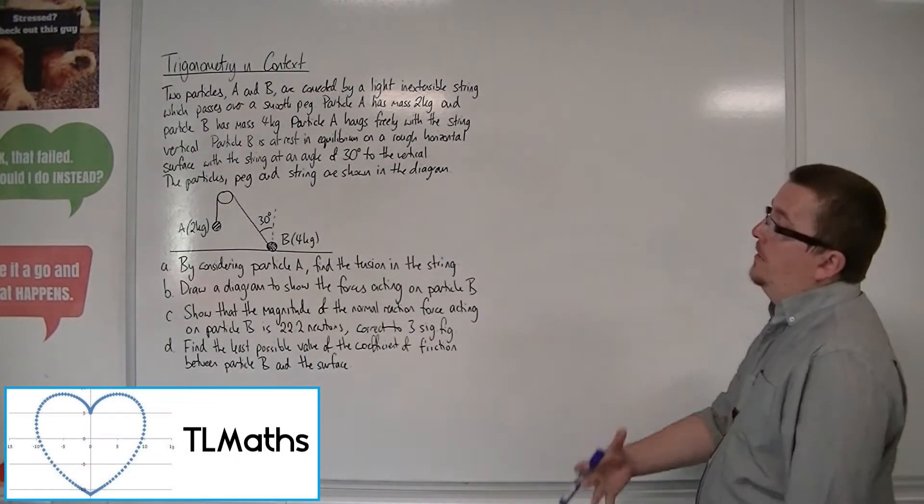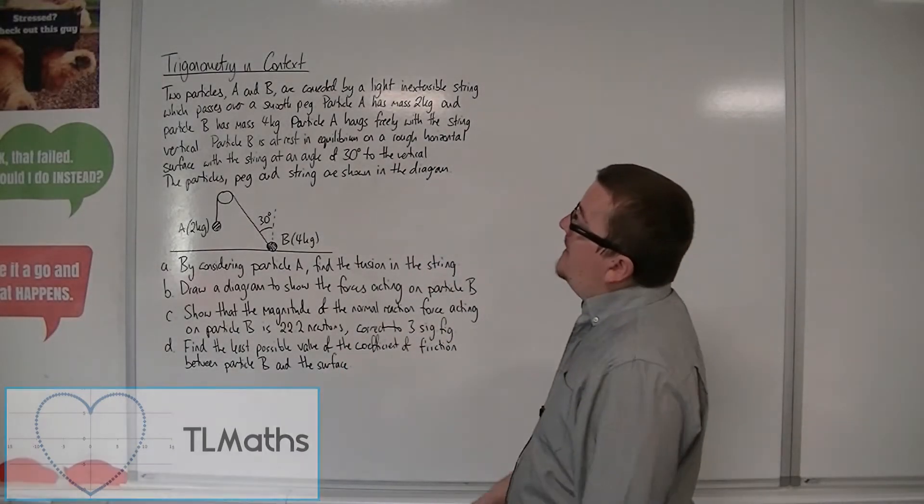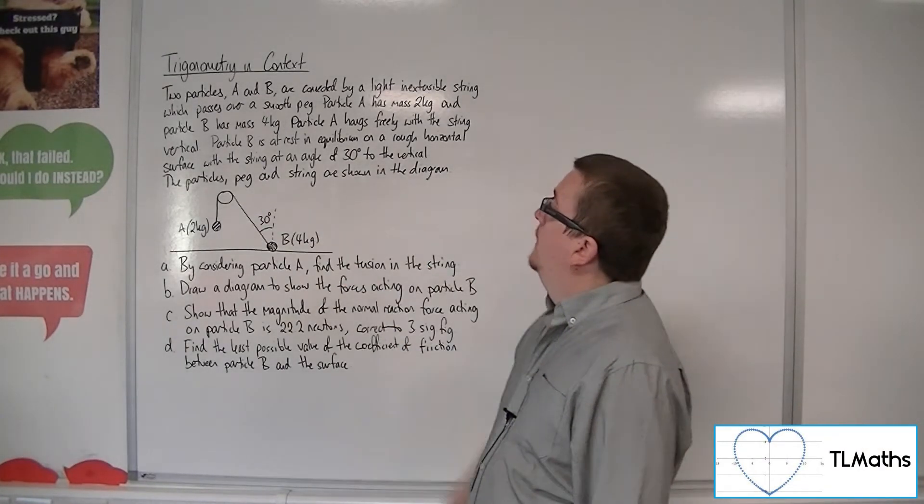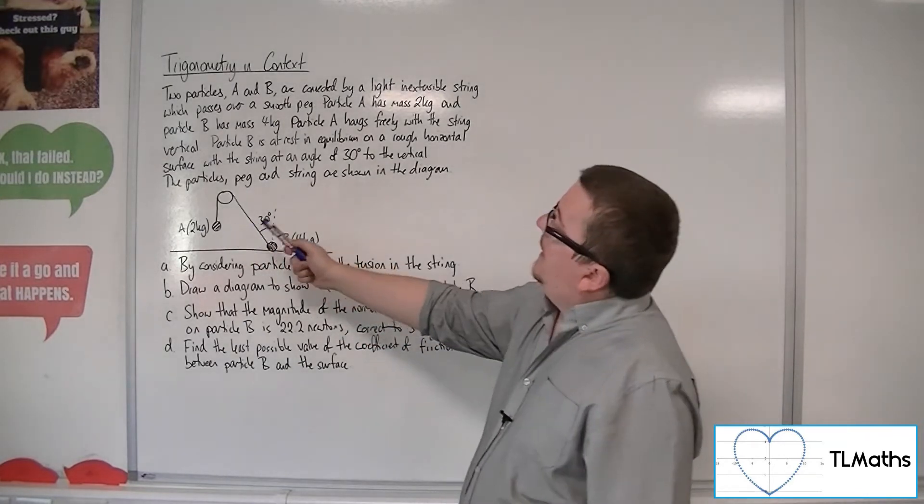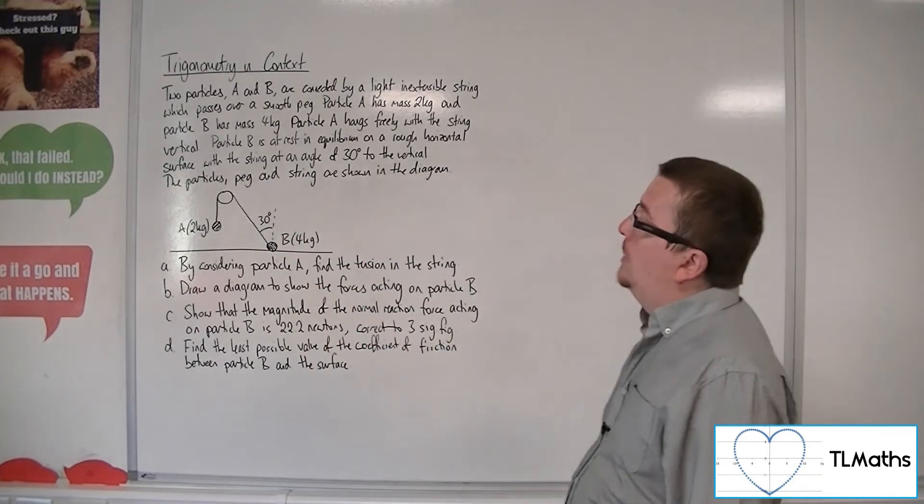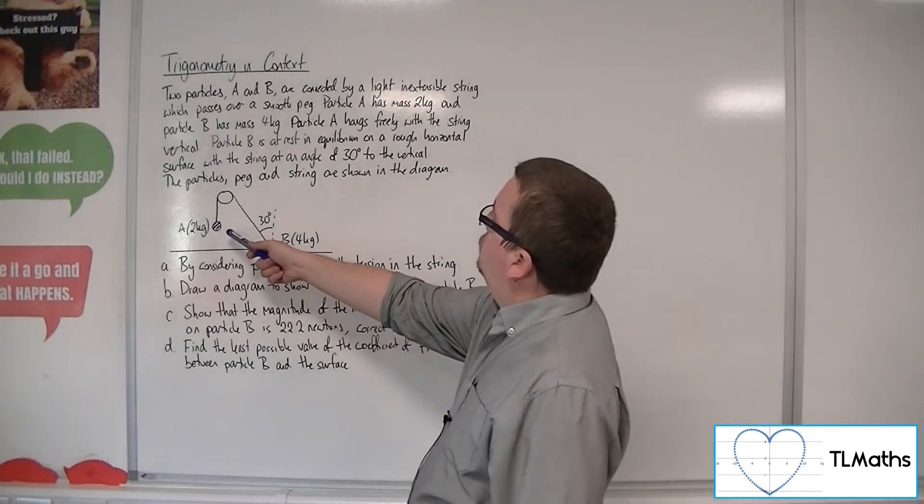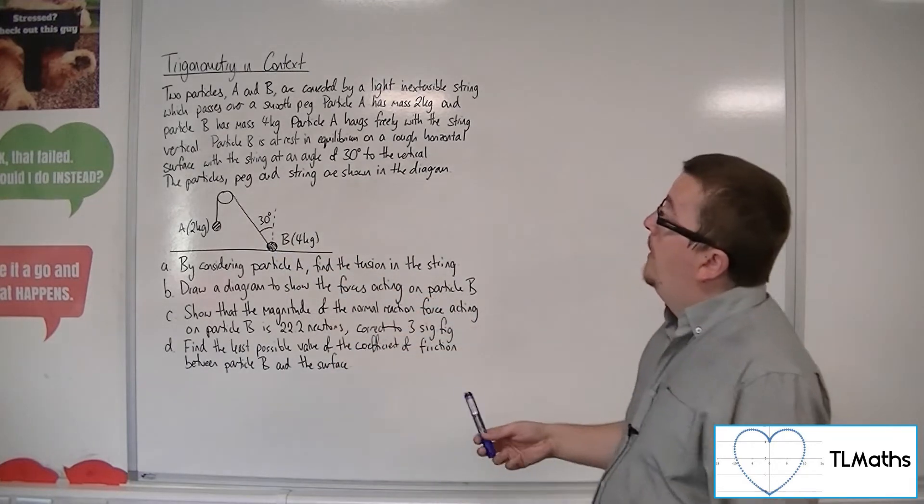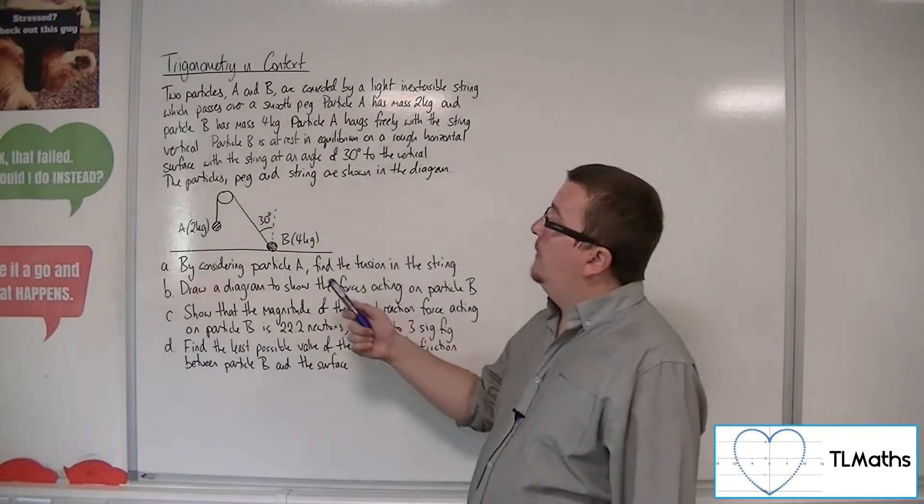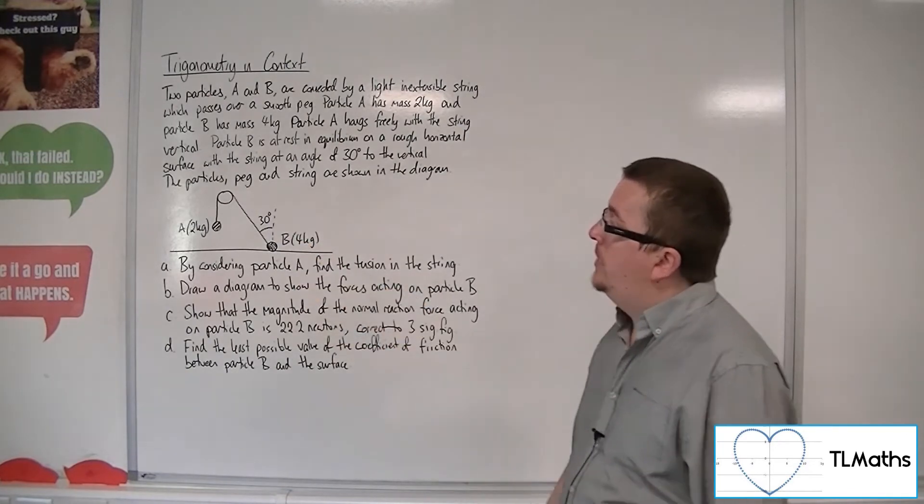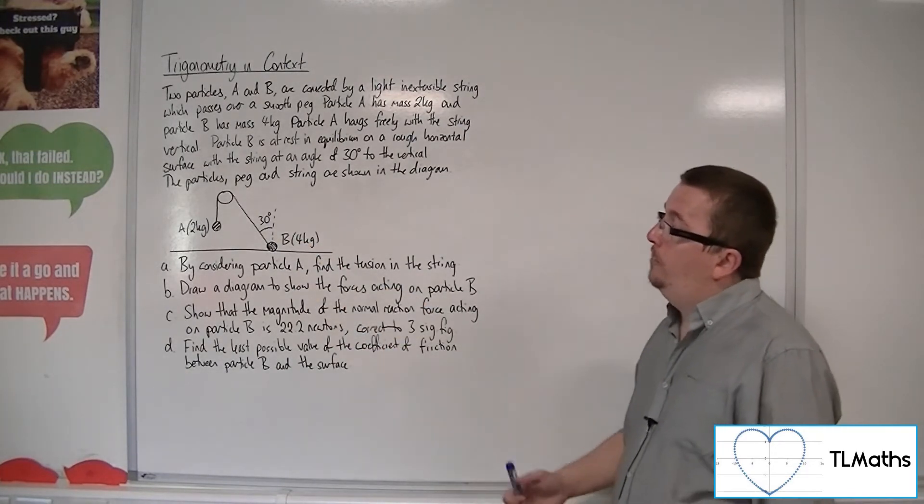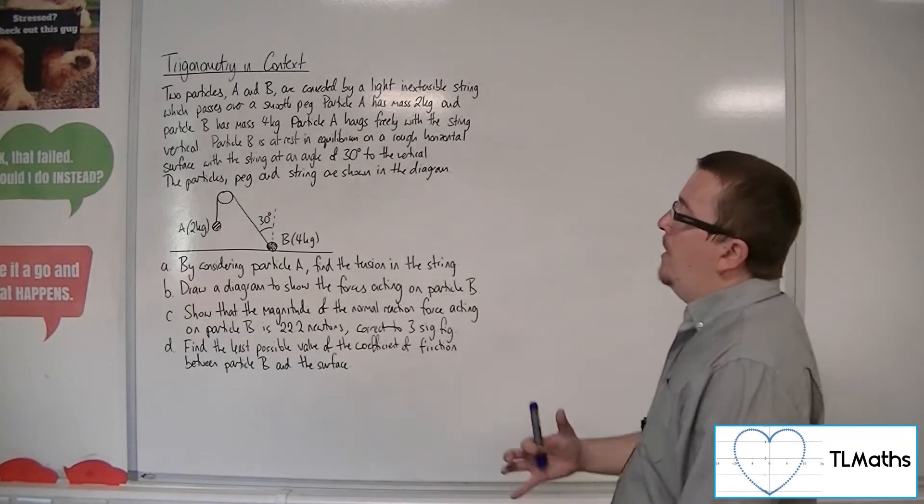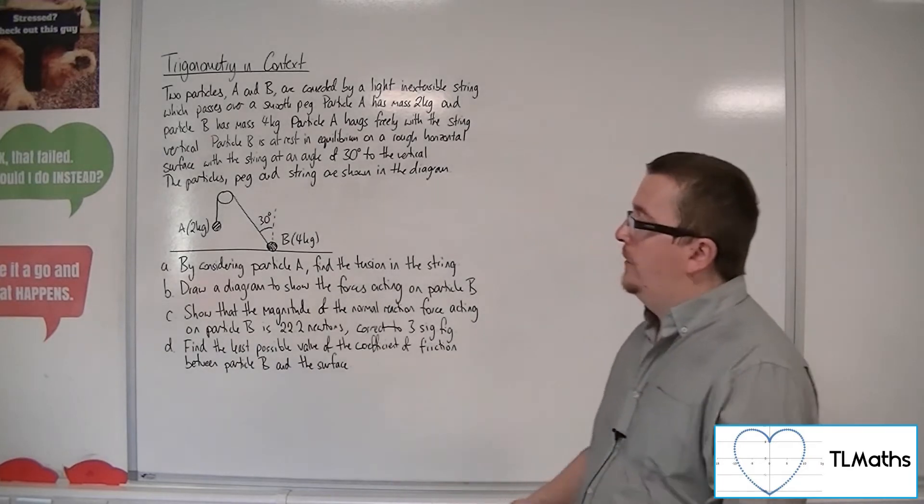Okay, so we have two particles, A and B, and they're connected by a light, inextensible string which passes over a smooth peg. Particle A has mass 2 kilos, and particle B has mass 4 kilos. Particle A hangs freely with the string vertical. Particle B is at rest in equilibrium on a rough horizontal surface with the string at an angle of 30 degrees to the vertical. The particles, peg and string are shown in the diagram. Firstly, by considering particle A, find the tension in the string.